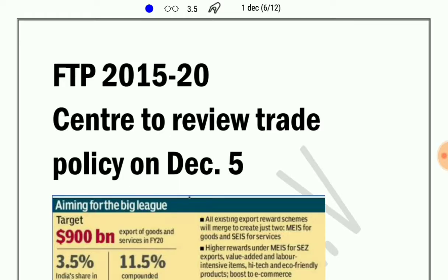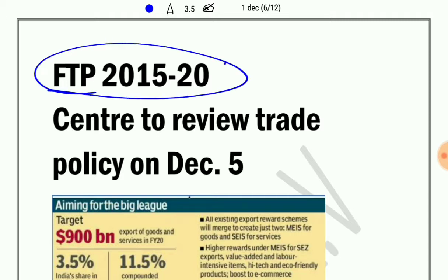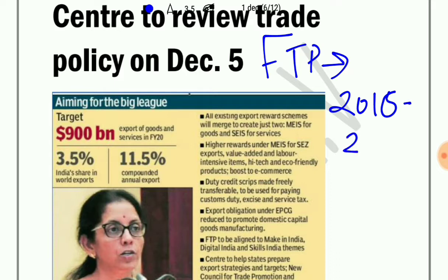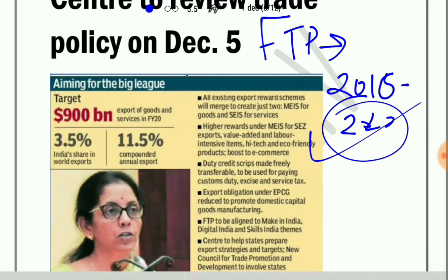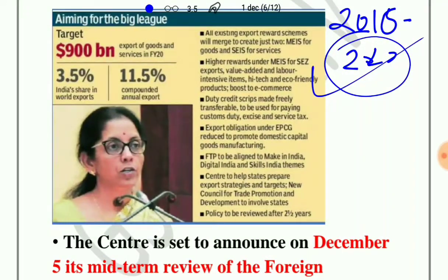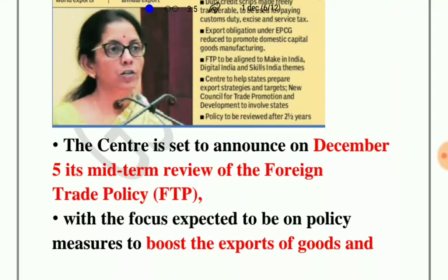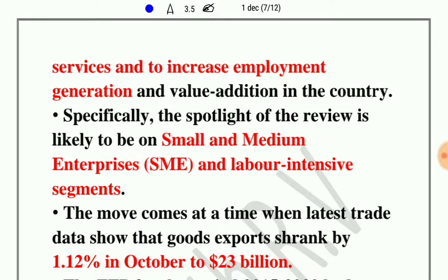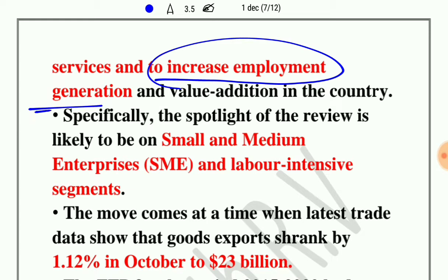The next news is related to Foreign Trade Policy 2015 to 2020. The government is going to take a mid-term review on December 5 about the foreign trade policy which covers 2015 to 2020. According to the policy, India has targeted 900 billion dollars of exports of goods and services. The centre will announce on December 5 its mid-term review, aiming to focus on policy measures that will boost exports of goods and services and increase employment generation and value addition in the country.